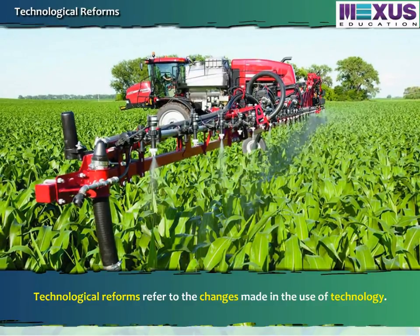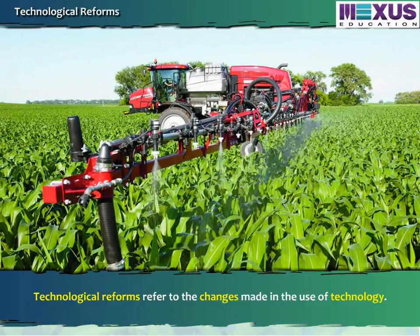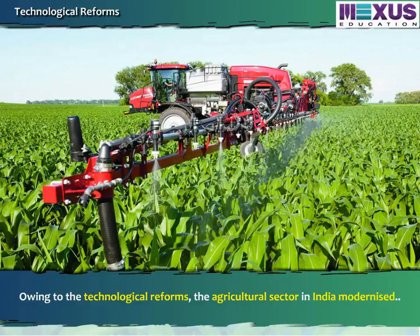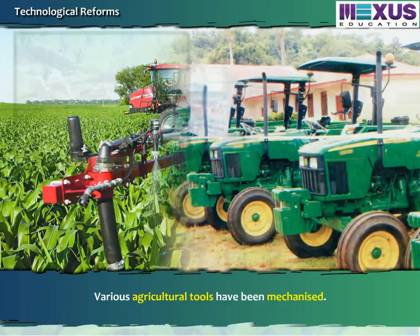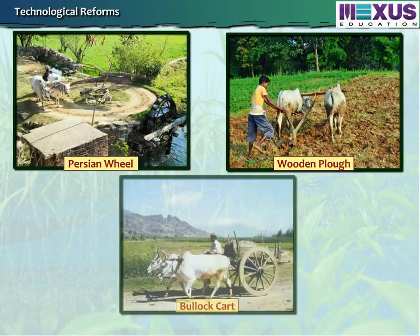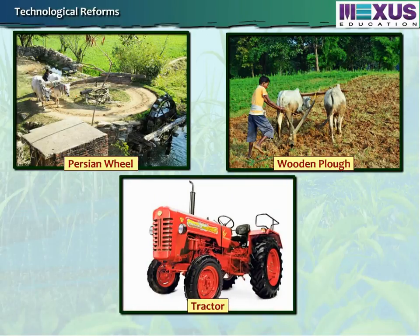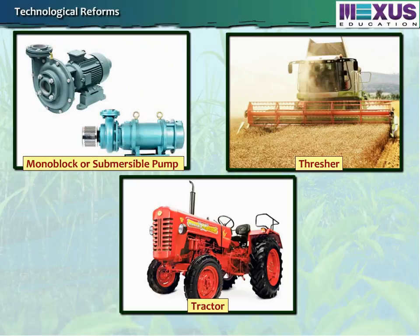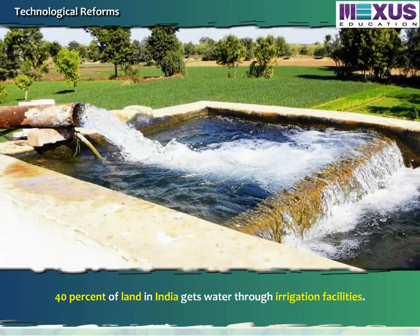Technological reforms refer to the changes made in the use of technology. Owing to the technological reforms, the agriculture sector in India modernized. Various agricultural tools have been mechanized. The Persian wheel, wooden plough and bullock carts have been replaced by the use of tractors, threshers and monoblock or submersible pumps. 40% of land in India gets water through irrigation facilities.